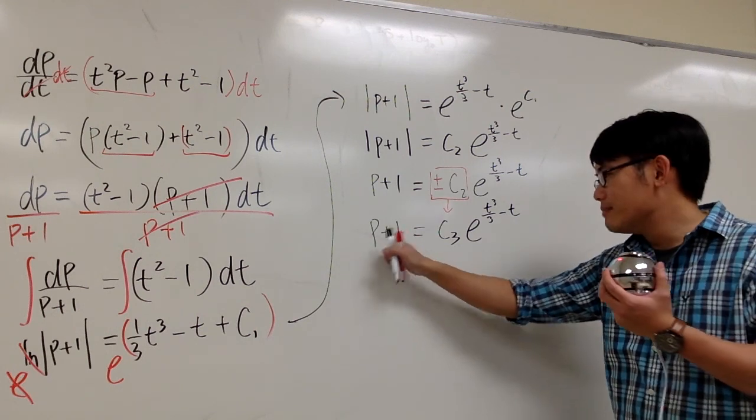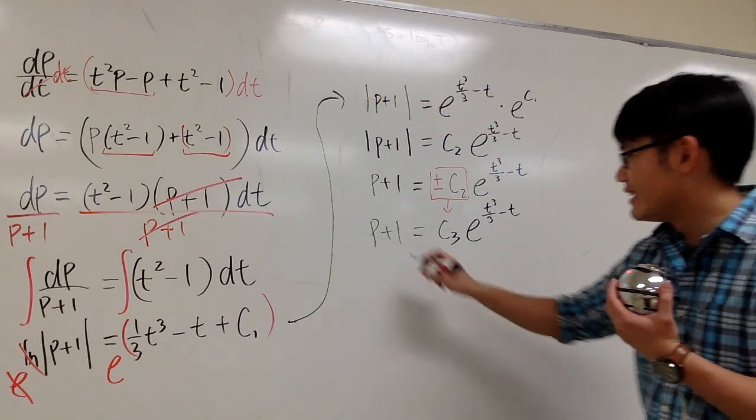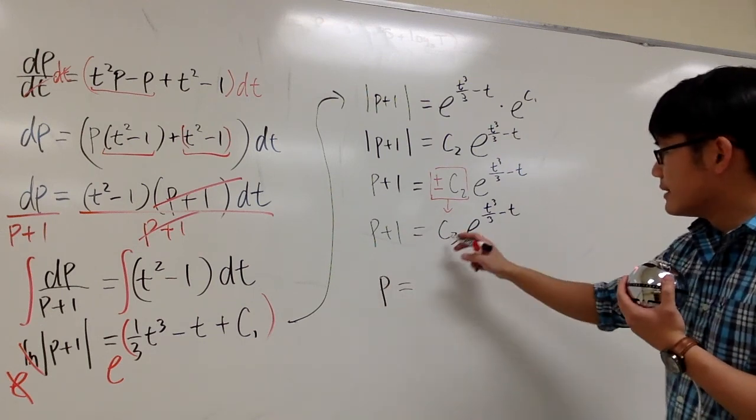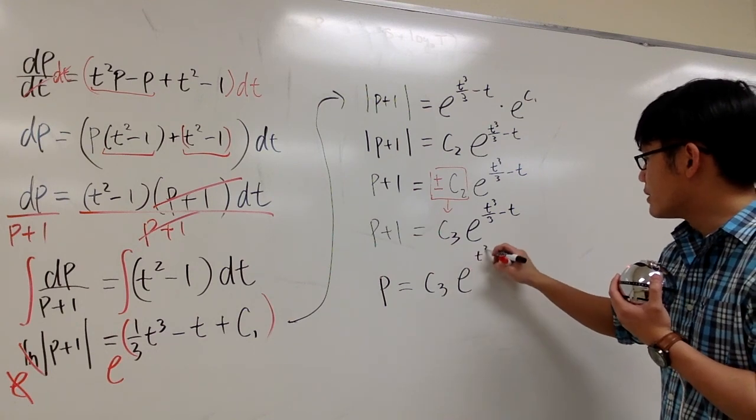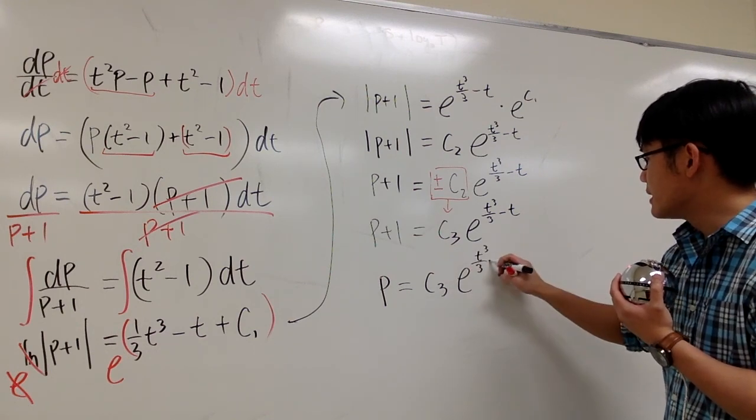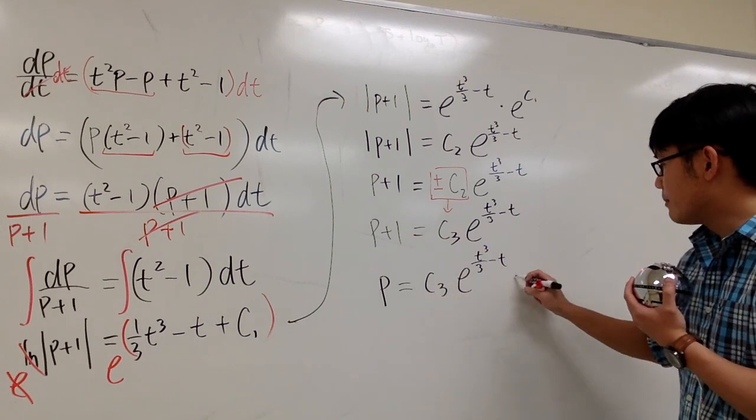All I need to do is minus 1 on both sides. So, we have p equals to c3 e to the t to the third power over 3 minus t. And then, at the end, we have the minus 1.